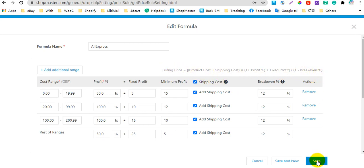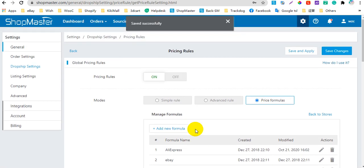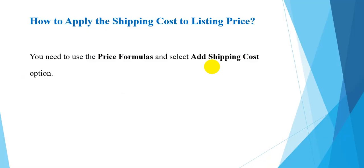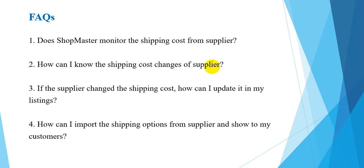After that you can see the price formulas applied. That is the way to import and apply the shipping cost to your product price. Next, I will show you some FAQs about the shipping cost. The first question is: does Shellmaster monitor the shipping cost from the supplier? The answer is no — Shellmaster does not monitor the shipping cost from your supplier.